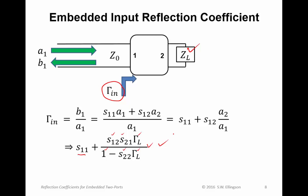One important observation: you can anticipate this result because if there's no reflection from the load — that is, gamma sub L equals zero — this whole second term vanishes, leaving just S11, which is exactly the input voltage reflection coefficient you'd expect. So the input reflection coefficient equals S11 when the output is matched, plus a term which describes the effect of any mismatch at the output.